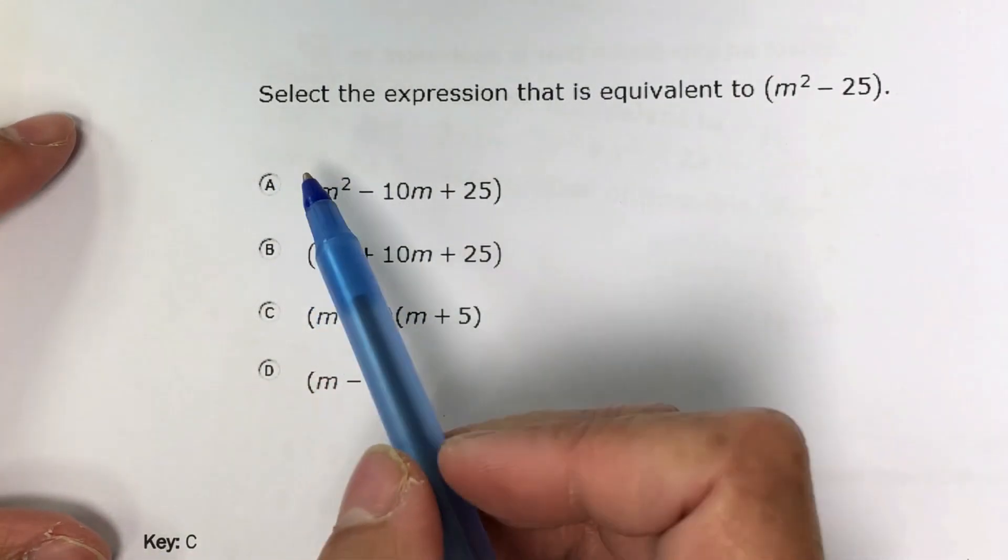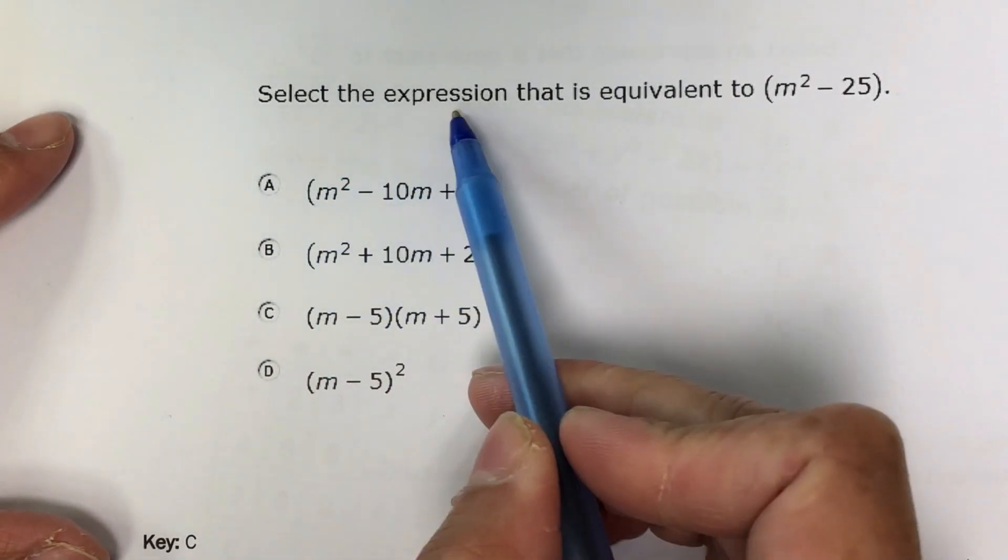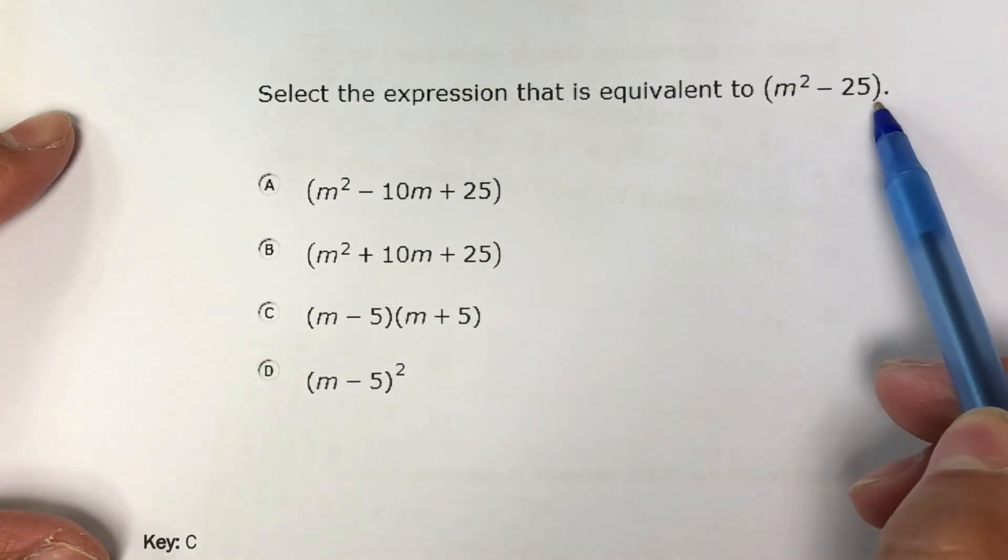Hey students, this is Mr. Eang going over question number one. Select the expression that is equivalent to m squared minus 25.